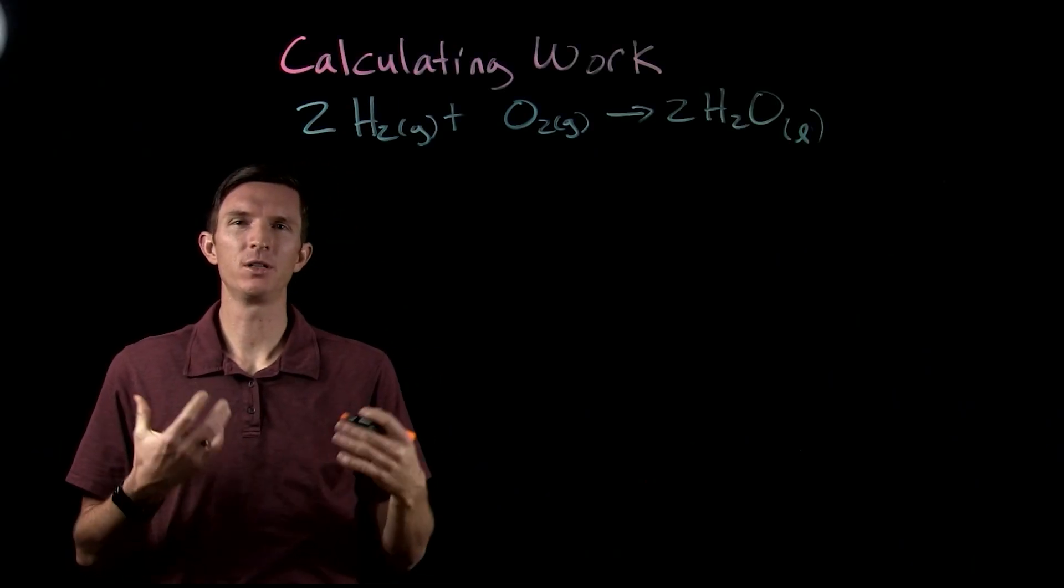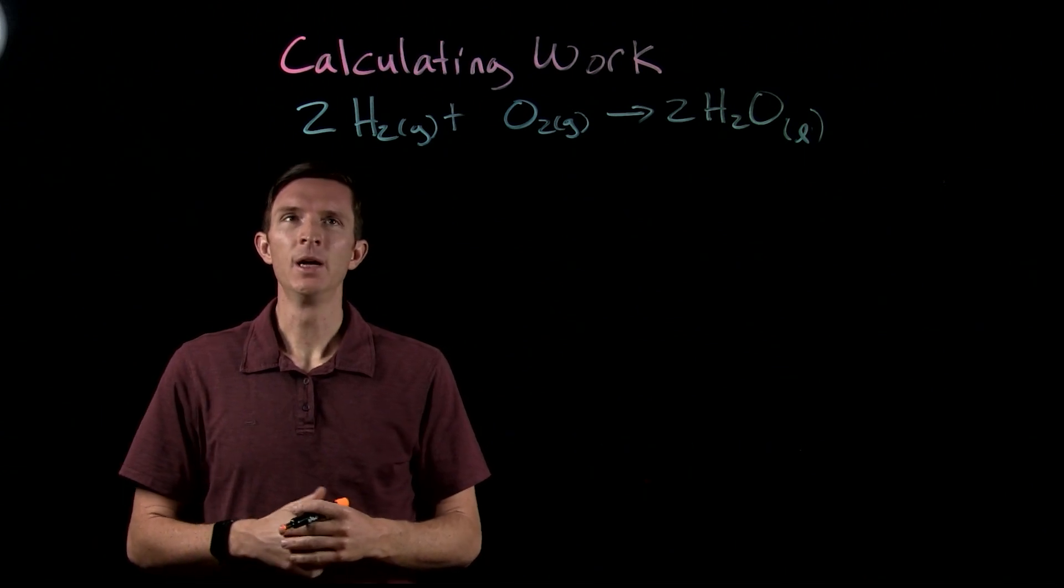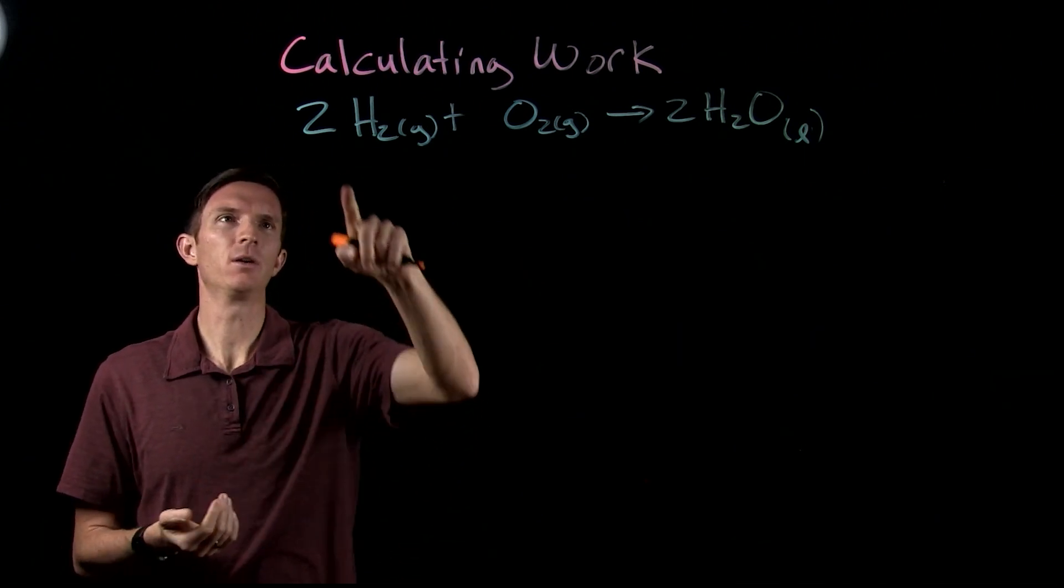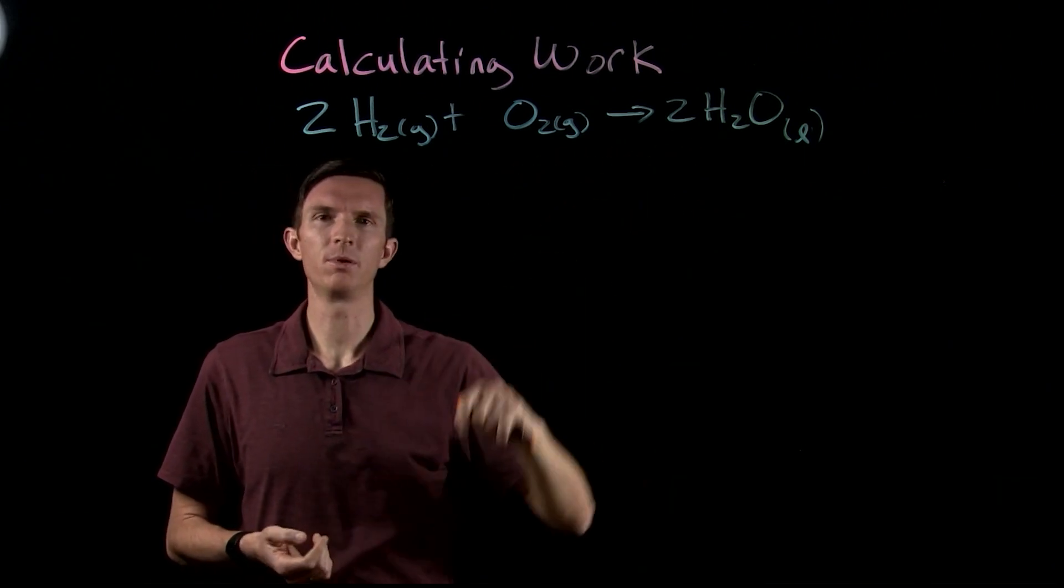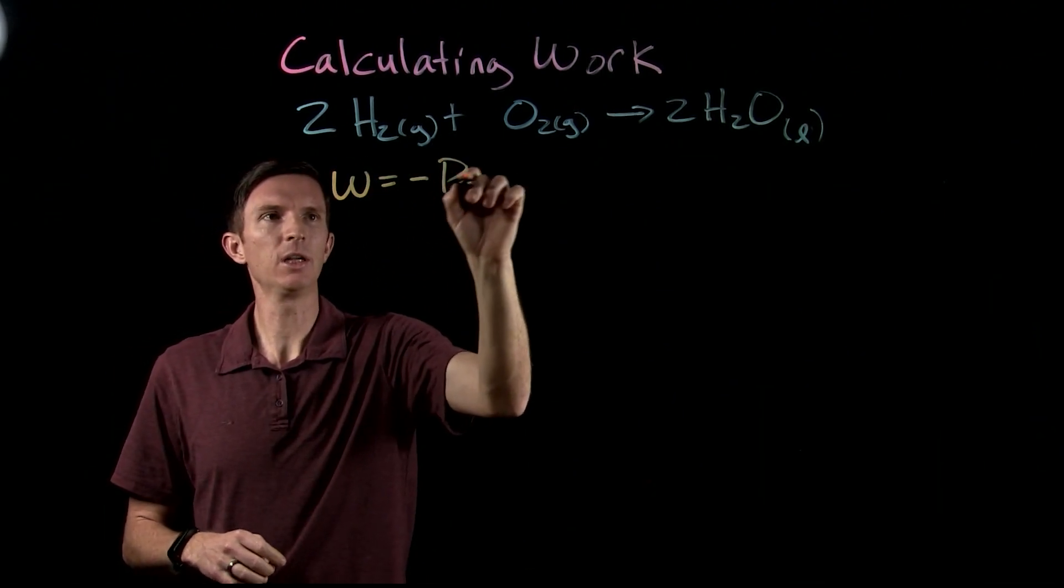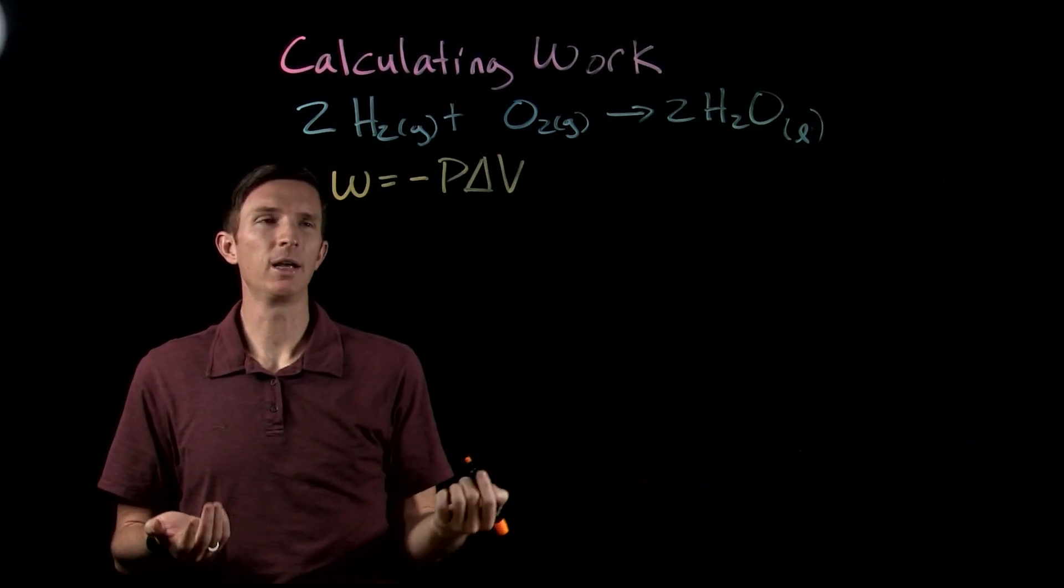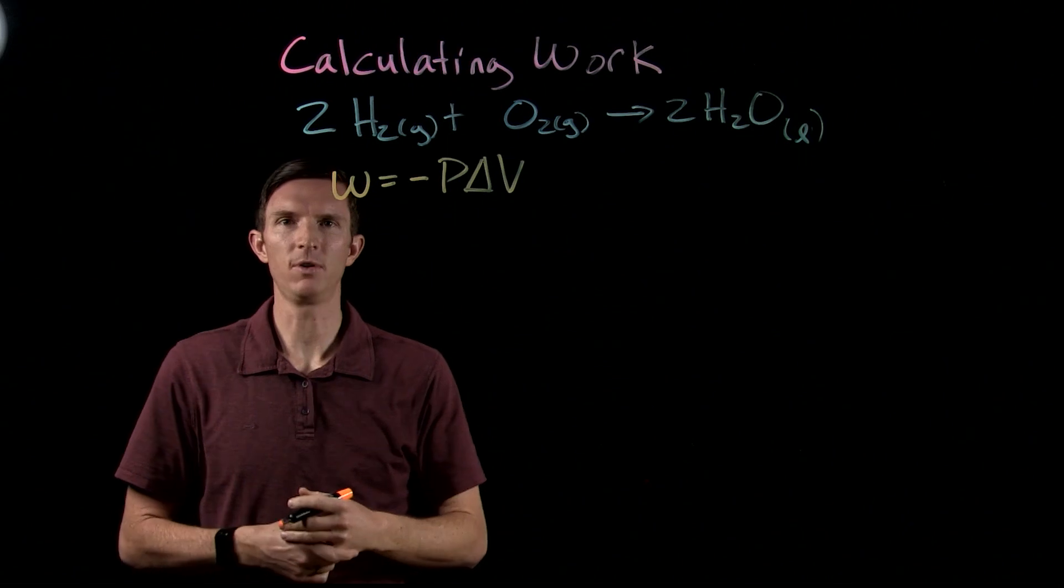Okay, so in this video we're going to talk about how we can actually quantify work based upon a reaction. I have an example reaction here where we have hydrogen, oxygen producing water. If we're going to calculate work, we said we're dealing with this idea of expansion work, and so work is equal to the negative of the pressure times the change in volume.